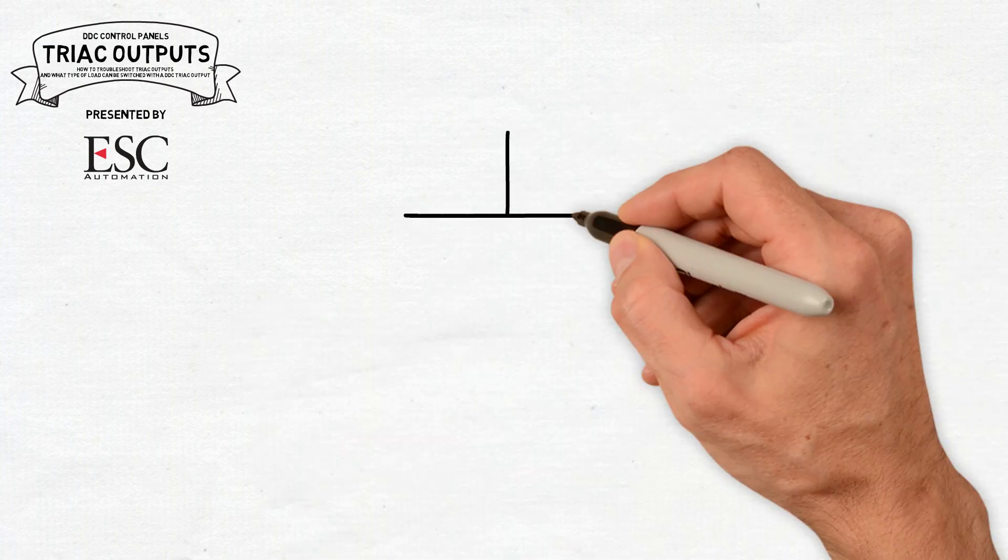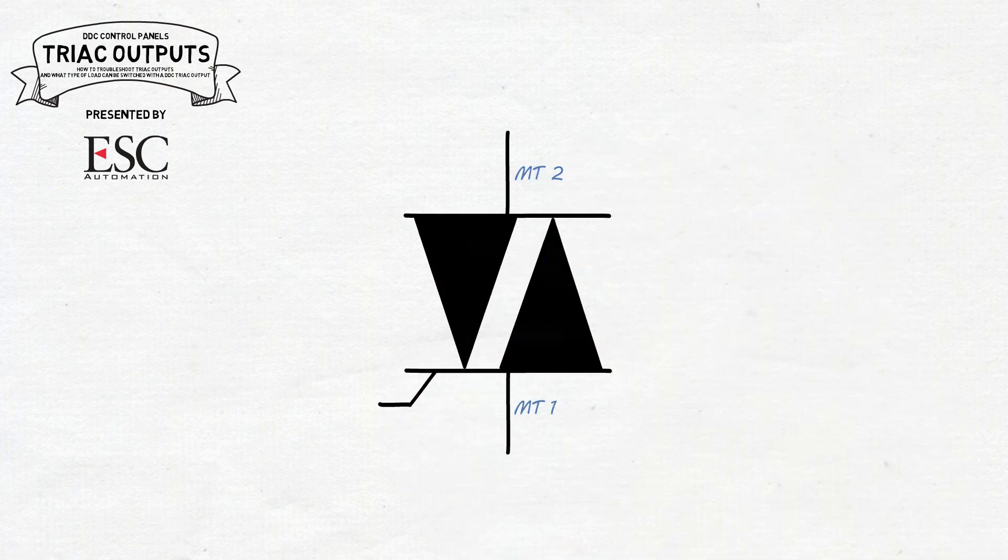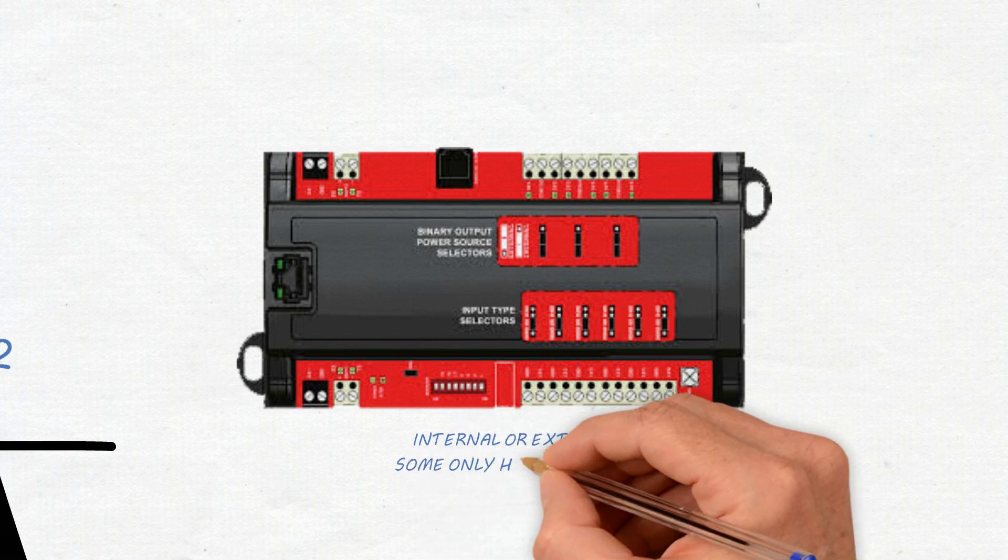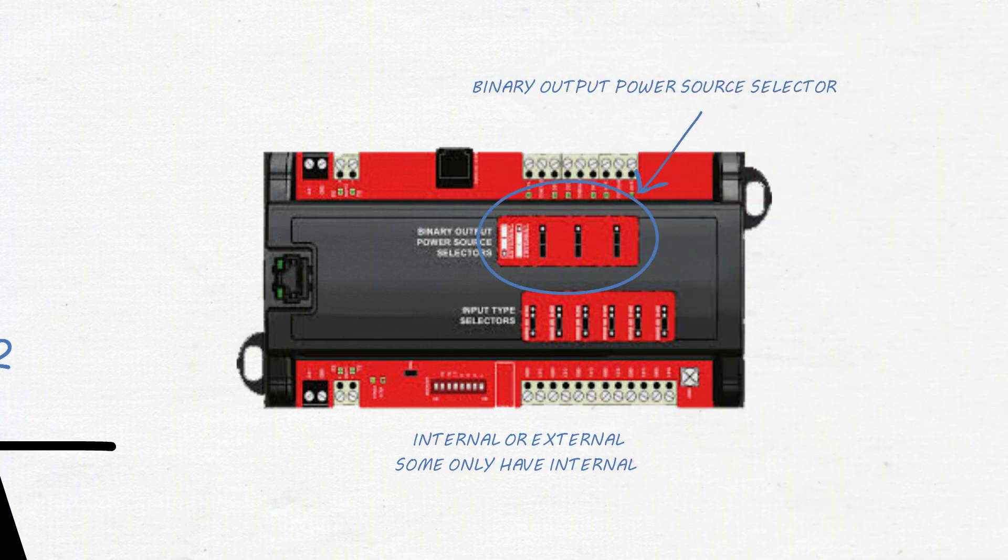Here's a drawing of a triac at the electrical state. Triacs on DDC panels will either be set to switch internal 24 volt AC power or external 24 volt AC power. Some DDC panels have an internal and external jumper that needs to be set on each triac output. Some DDC panels only have internal power outputs. Here's a drawing showing a DAC 606 with a binary output power source selector for internal or external power.